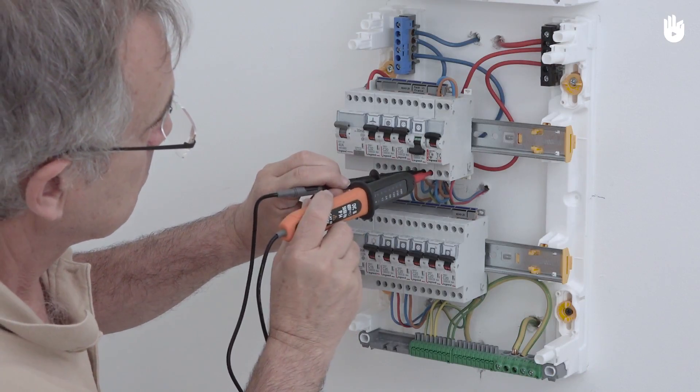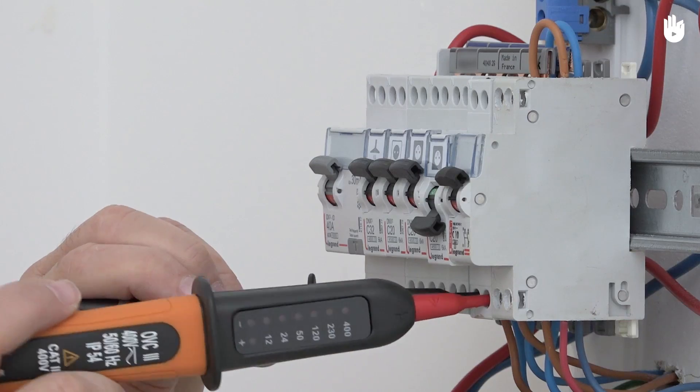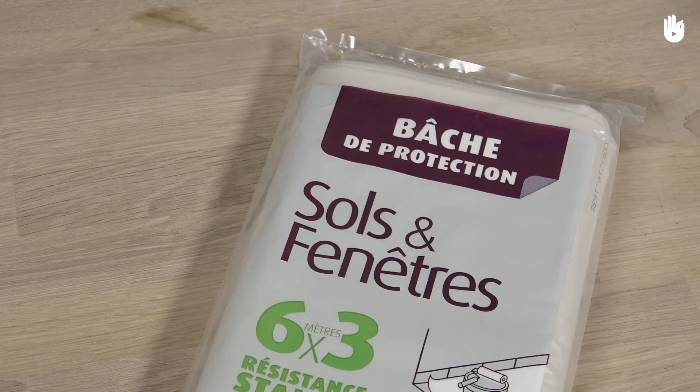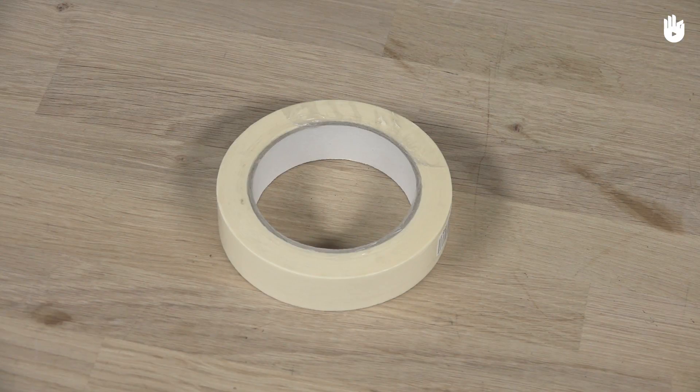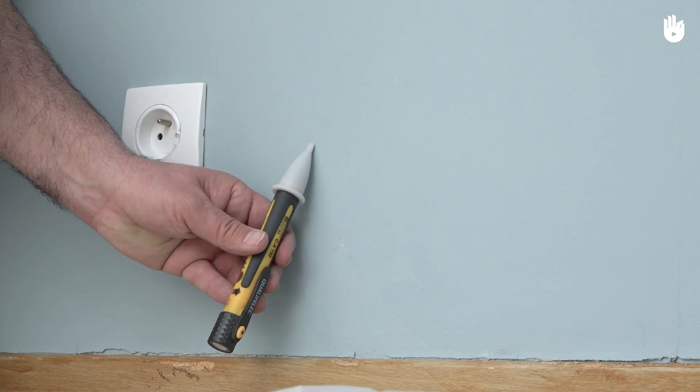To prepare the worksite, you will need a voltage detector, a protective tarpaulin sheet and masking tape. This preparation requires two steps, which we will explain for you.